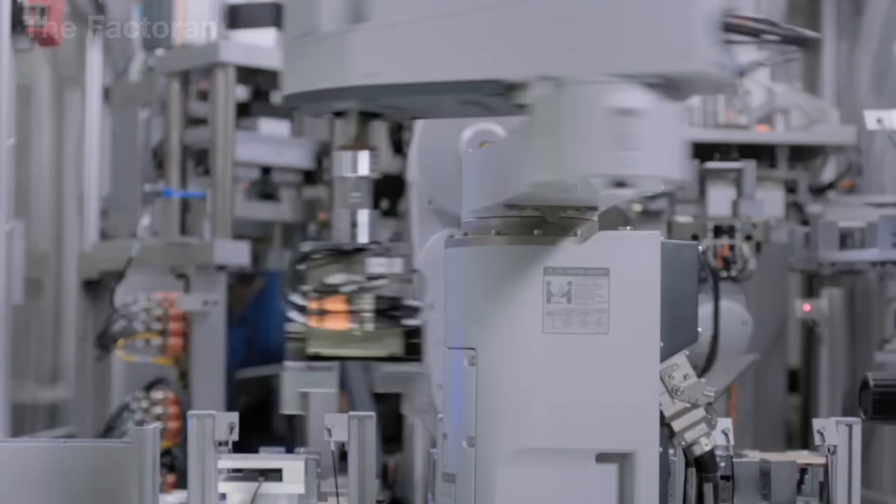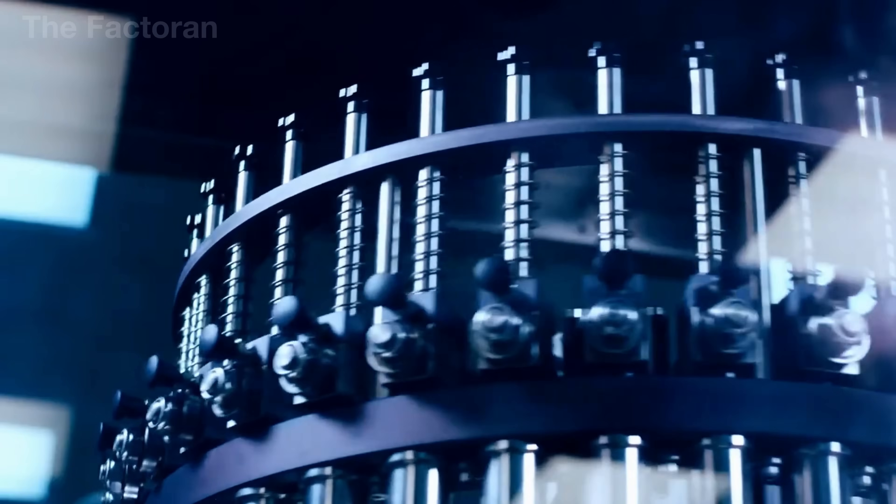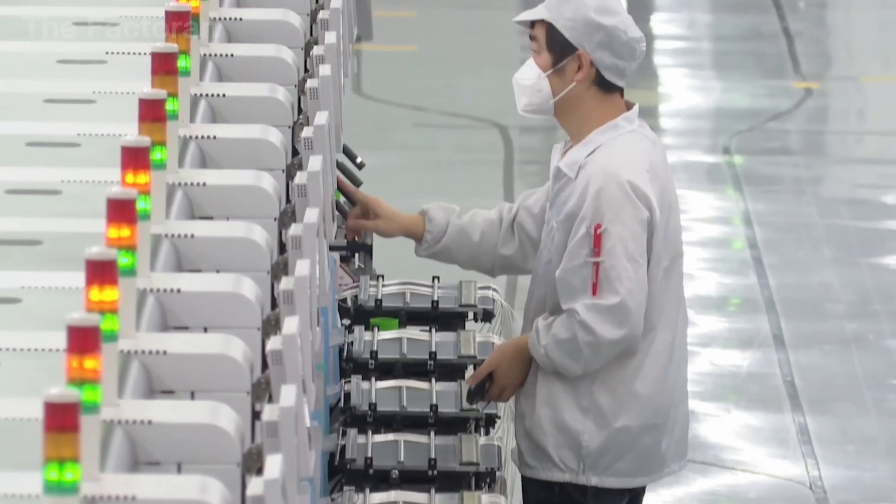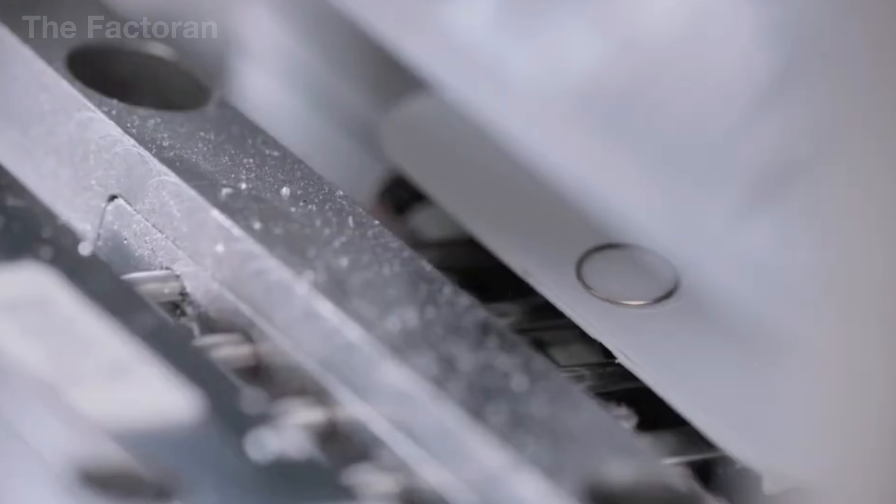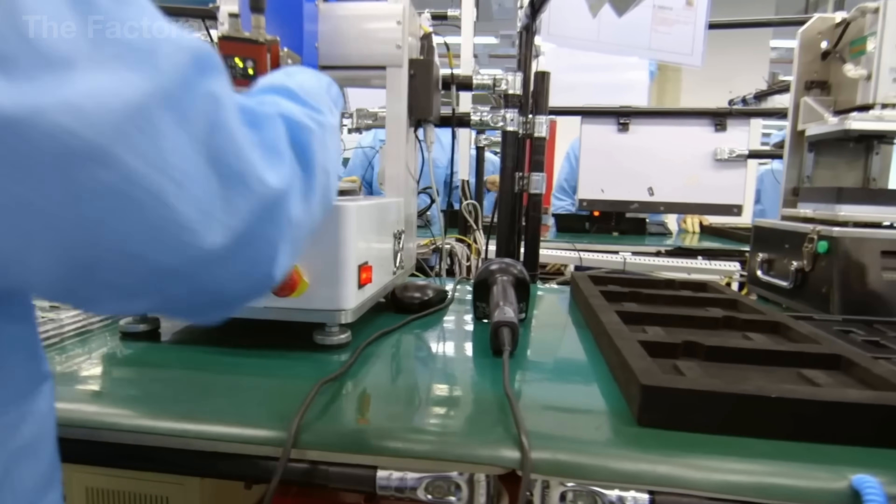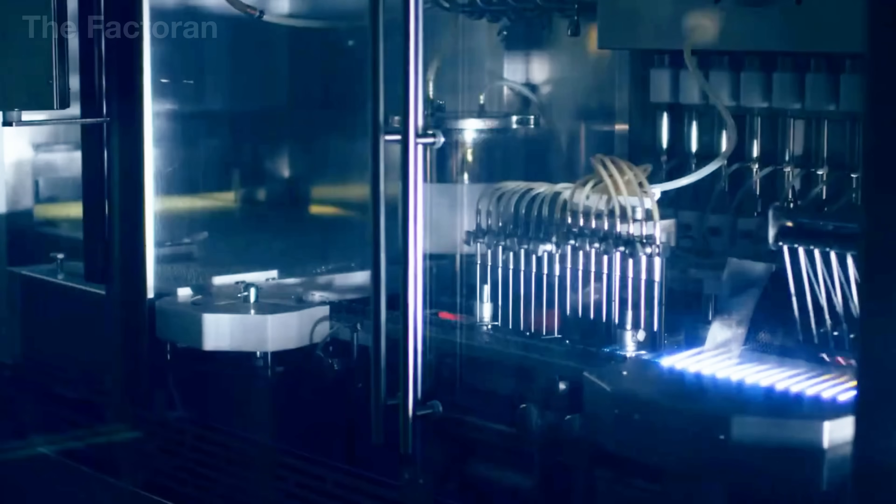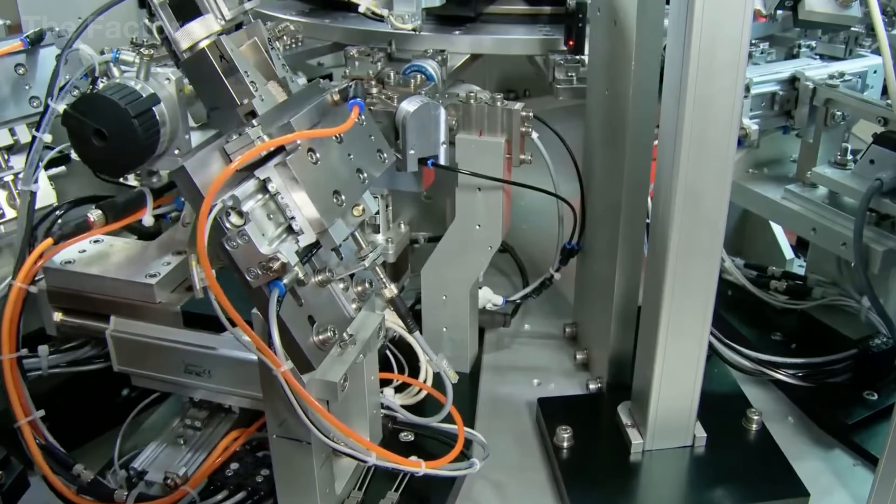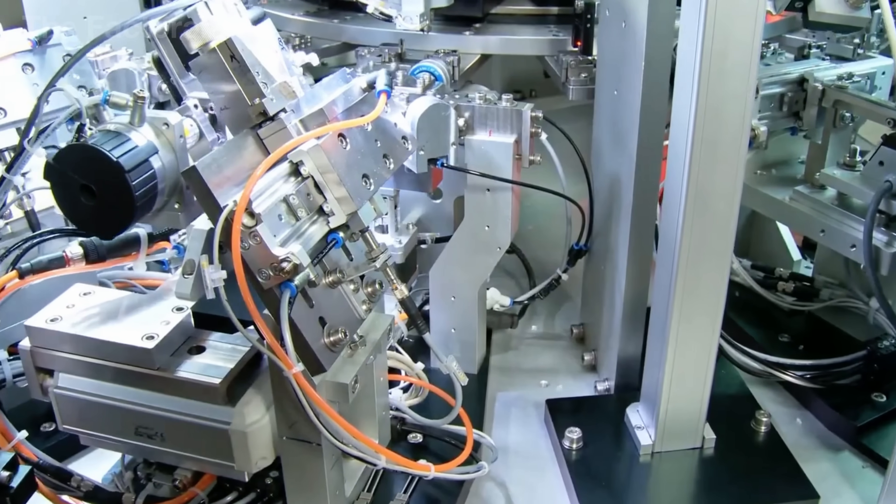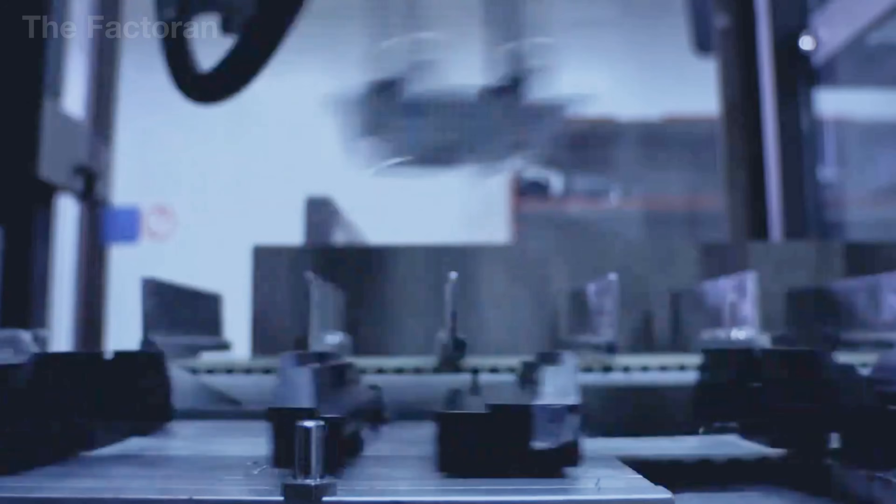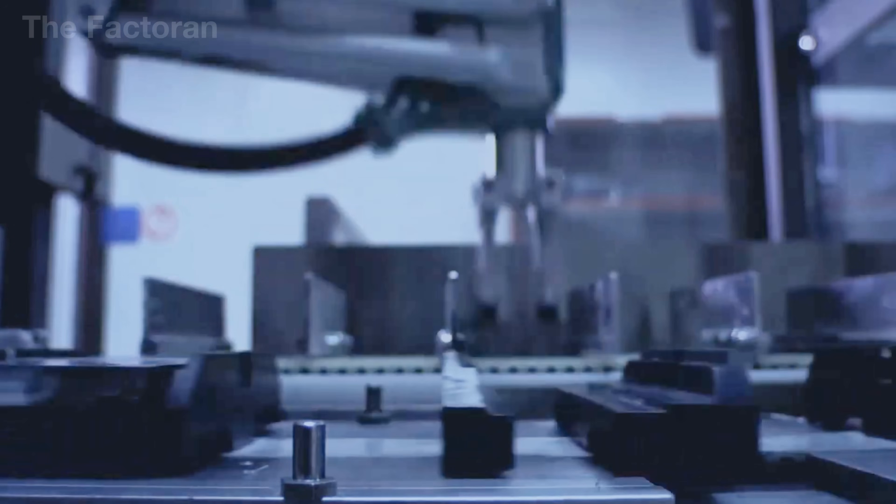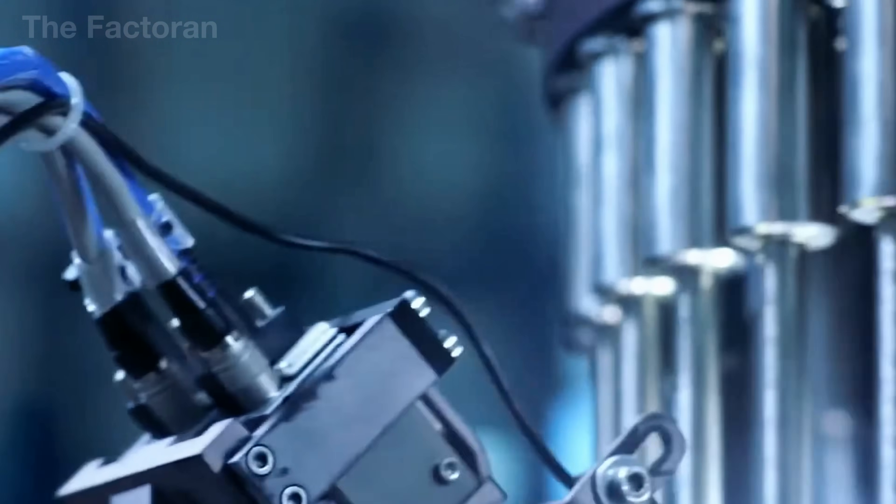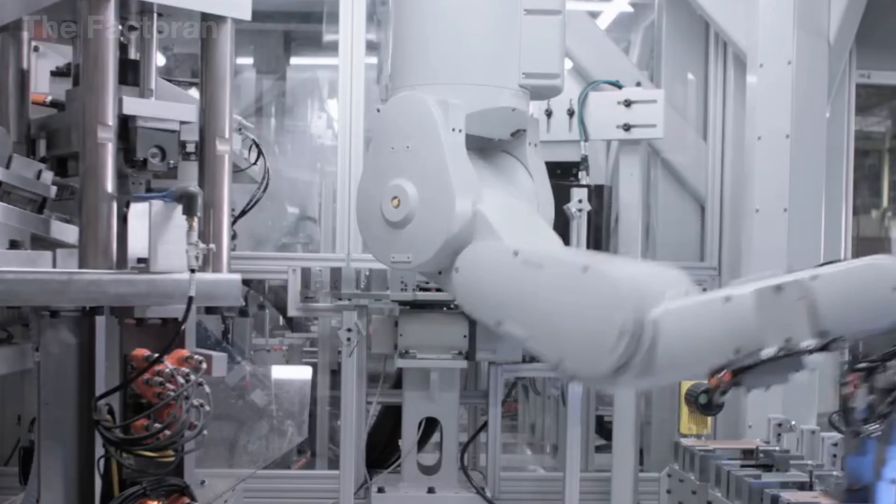Once the physical form of the iPhone is fully complete, it enters the quality control stage, the critical phase that determines whether the product meets the high standards required to reach the hands of users. At this stage, technology and human oversight work in tandem to detect every flaw, no matter how small. Automated robotic systems perform a series of technical inspections, from touchscreen sensitivity, camera performance, and audio output, to network connectivity and processing efficiency. Even a single deviation beyond the allowed threshold results in the device being immediately removed from the production line.